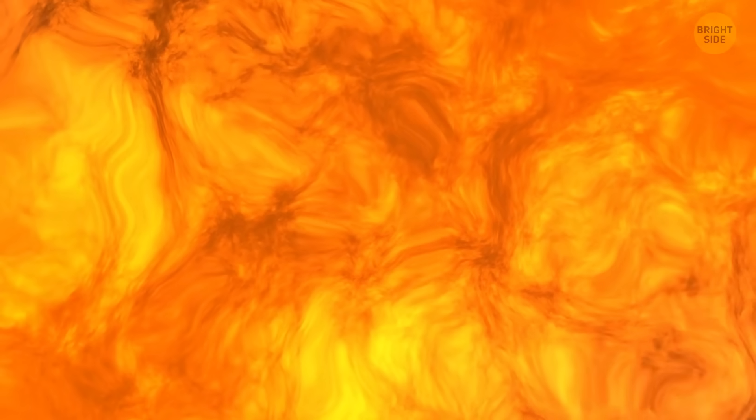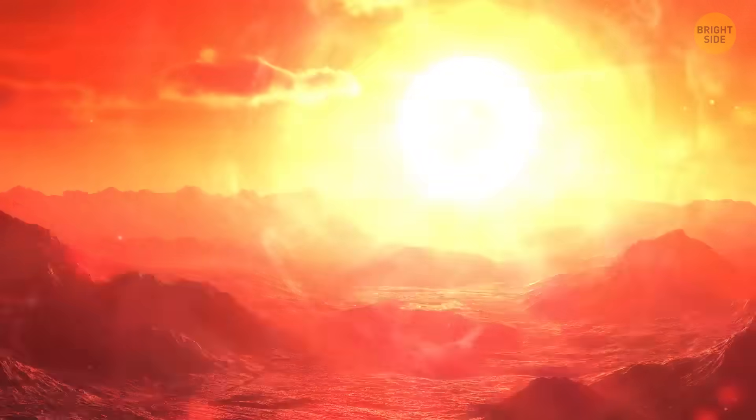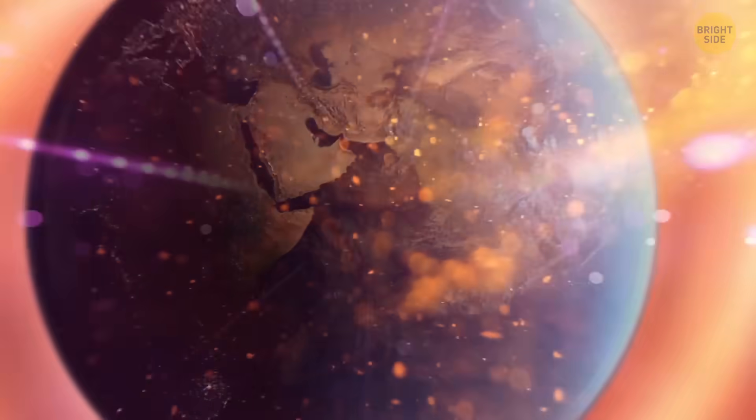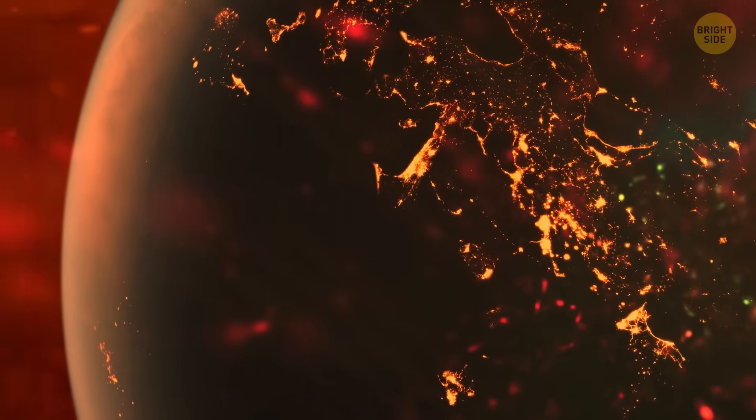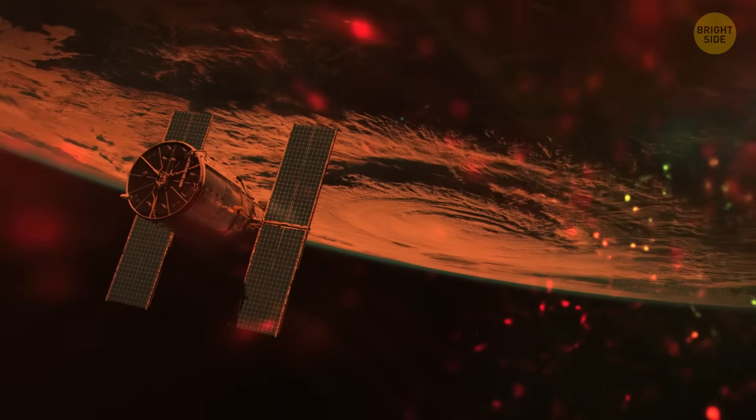A solar storm is crashing into Earth like a cosmic tsunami. First, the atmosphere ignites, sparking massive auroras. High-energy radiation slams into the surface, frying power grids, turning lights off across continents, and knocking out satellites.